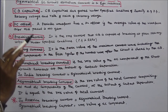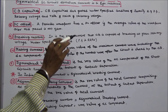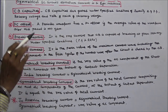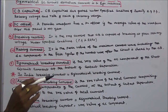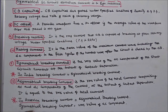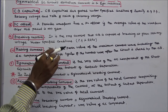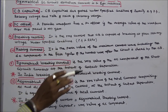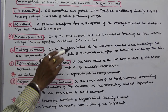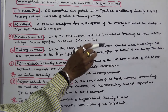The ninth term is breaking current: it is the RMS current that the circuit breaker is capable of breaking at a given recovery voltage under specified conditions, i.e., power factor and rate of rise of recovery voltage. The tenth term is making current: it is the peak value of the maximum current wave including the DC component in the first cycle of the current wave after the circuit is closed by the circuit breaker.